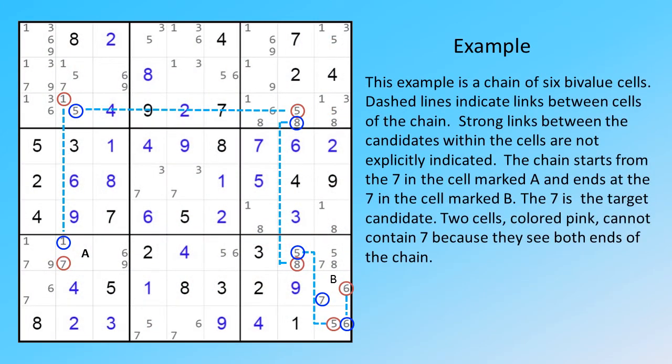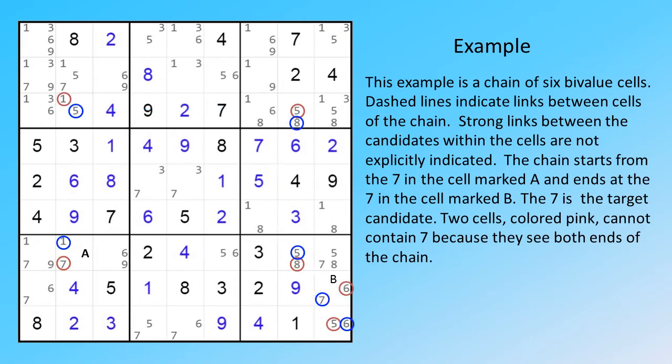This example is a chain of six bi-value cells. Dashed lines indicate links between cells of the chain. Strong links between the candidates within the cells are not explicitly indicated. The chain starts from the 7 in the cell marked A and ends at the 7 in the cell marked B. The 7 is the target candidate.